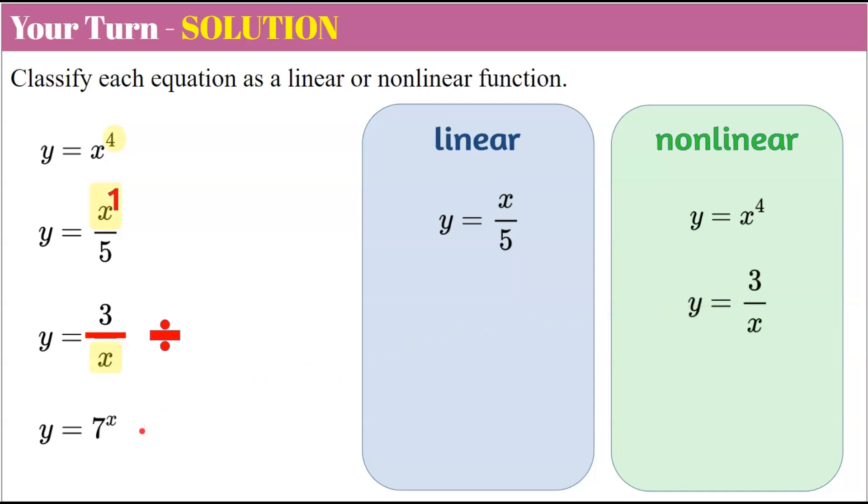And our fourth equation, y equals 7 to the x, our x is an exponent. Seeing as our exponent here to the variable is not 1, our variable is the exponent, that is a rule breaker and is non-linear.